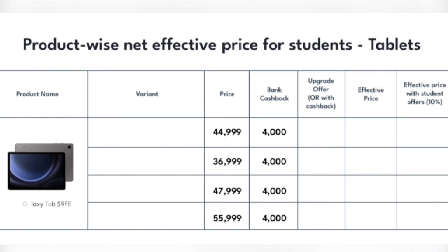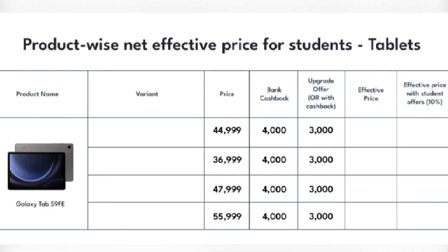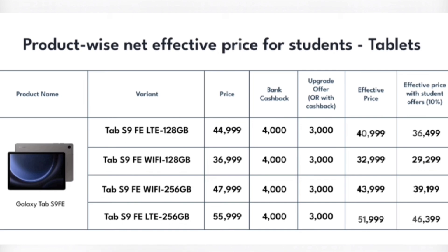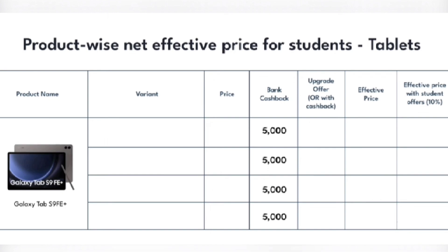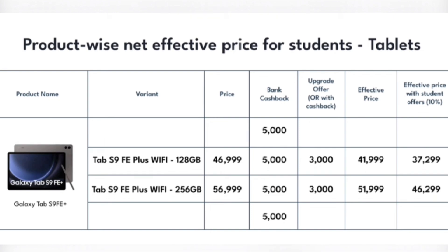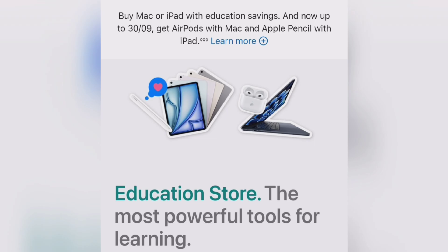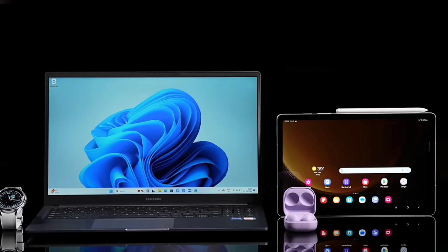Talking about the Tab S9 FE — I bought this for 21,000 rupees. Here the bank discount is less, but on Samsung Shop it's around 7,000 rupees discount. The Tab S9 FE is 25,000 on this platform but you get more discount on Samsung Shop. This is how you're getting loads of discounts with the help of UniDaze from both Apple and Samsung.